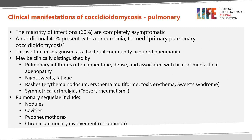The majority of infections, 60%, are completely asymptomatic. An additional 40% present with pneumonia, termed primary pulmonary coccidioidomycosis. This is often misdiagnosed as a bacterial community-acquired pneumonia, but may be clinically distinguished by pulmonary infiltrates in the upper lobe that are often dense and associated with hilar or mediastinal adenopathy. The patient may have night sweats, fatigue, and particular rashes including erythema nodosum, erythema multiforme, toxic erythema, and Sweet syndrome. The patient may also develop symmetric arthralgias, known as desert rheumatism. Pulmonary sequelae include nodules, cavities, pyopneumothorax, and chronic pulmonary disease, which is uncommon.